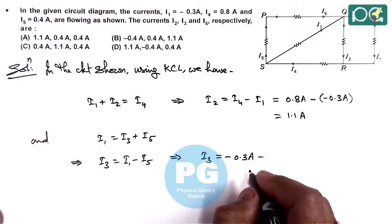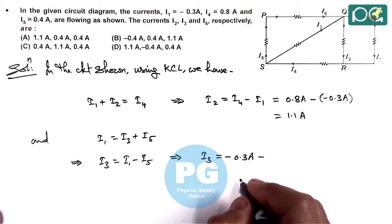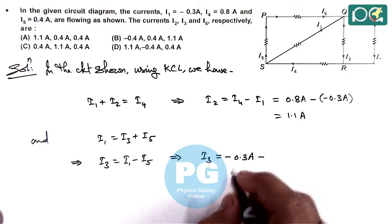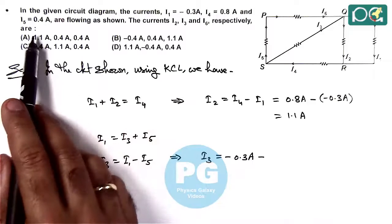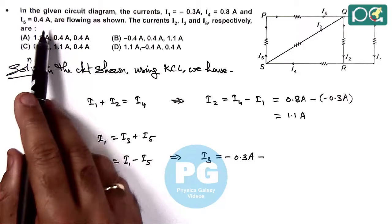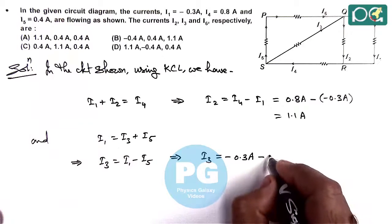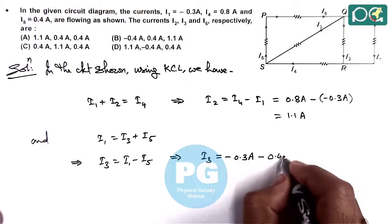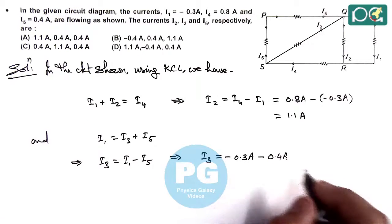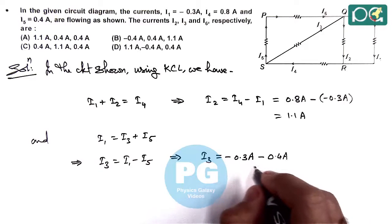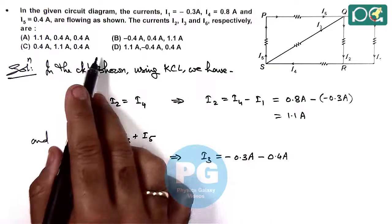Here, the value of i5 we are getting is, i5 is given to us as 0.4 ampere, minus 0.4 ampere. Here we can check the value we are getting is slightly different than the values given here.